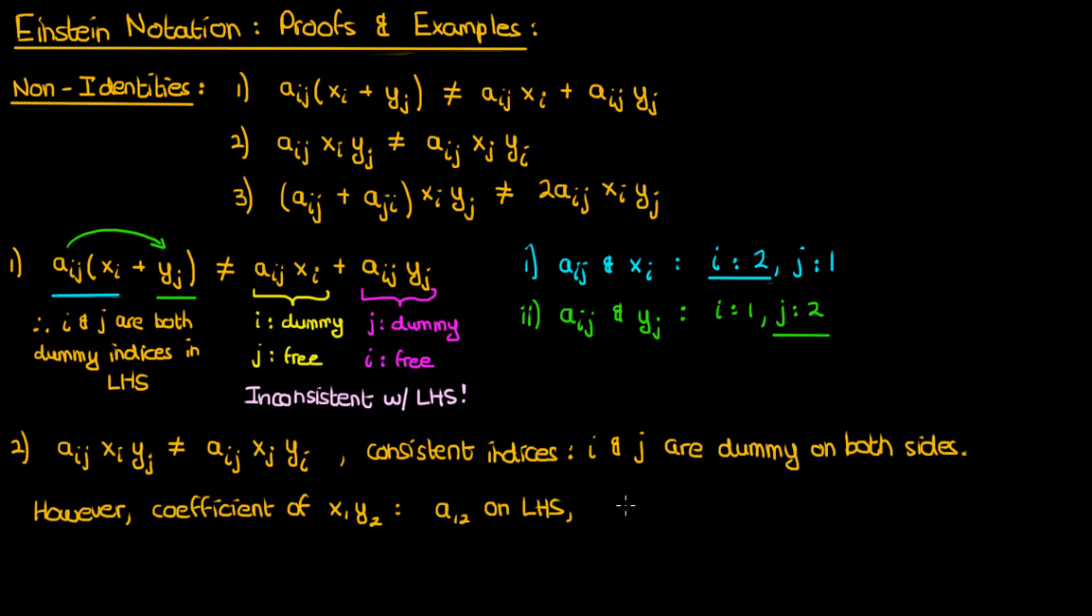the coefficient will be a21, and since a12 isn't necessarily equal to a21, this means that the left and right-hand sides aren't necessarily equal to each other.